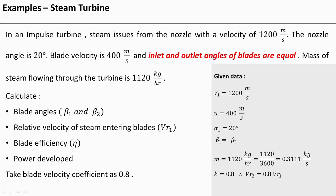Blade velocity U is given as 400 meter per second. The inlet and outlet angles of the blades are equal, so β1 is equal to β2. Mass flow rate of the steam is 1120 kg per hour divided by 3600 to convert to kg per second. The blade velocity coefficient is 0.8, meaning relative velocity at outlet Vr2 is 0.8 times relative velocity at inlet.